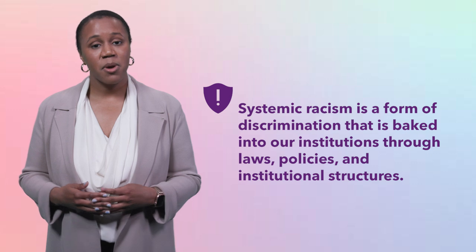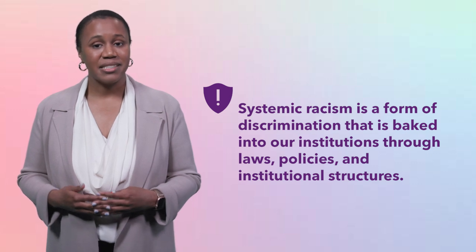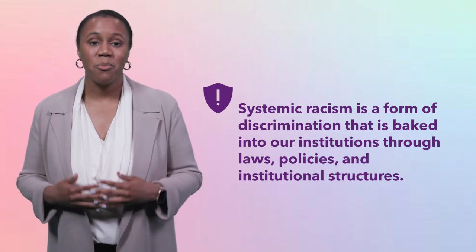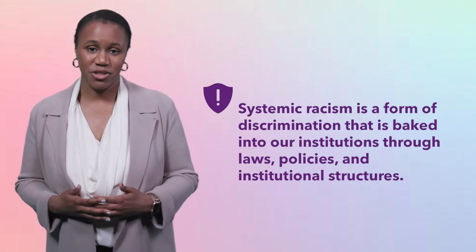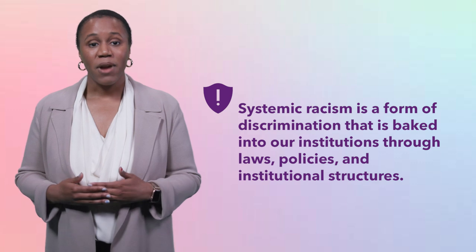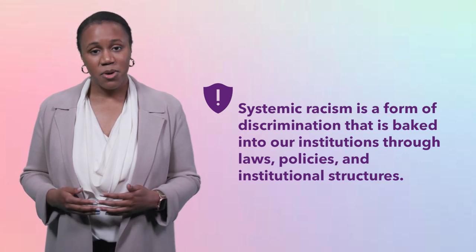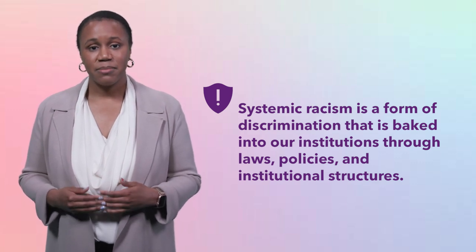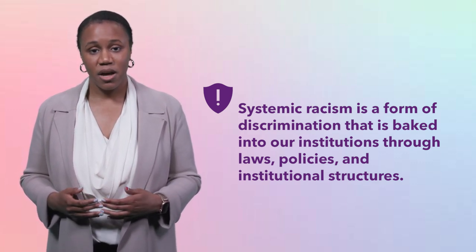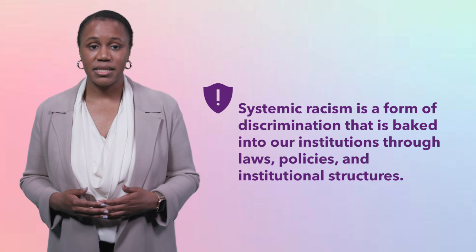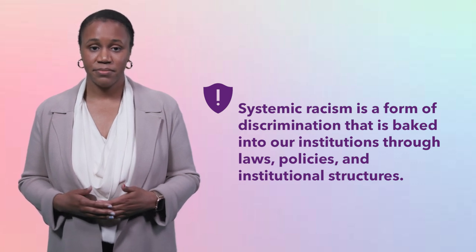Systemic racism is a form of discrimination that is not centered in one identifiable bad actor. Rather, this is a form of discrimination that is baked into our institutions through laws, policies, and institutional structures.